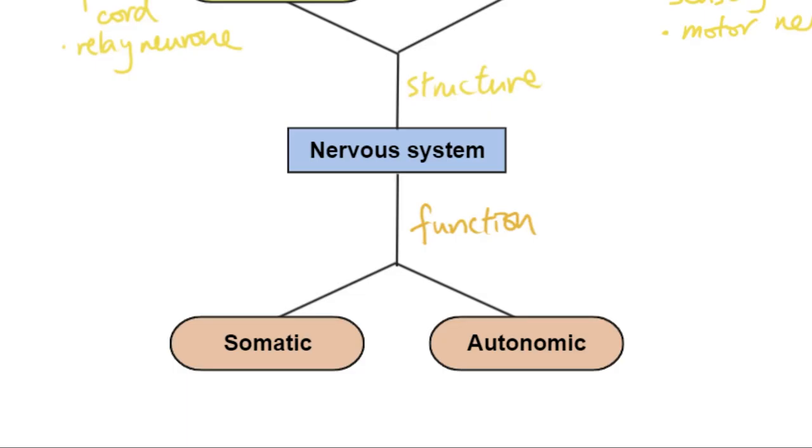The somatic nervous system is referring to any conscious actions. For example, you might be consciously raising your arm or consciously going for a run or moving your hand from this location to that location, so it's about anything that's in your control.